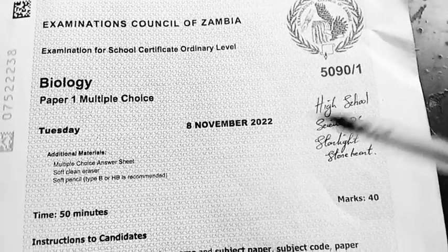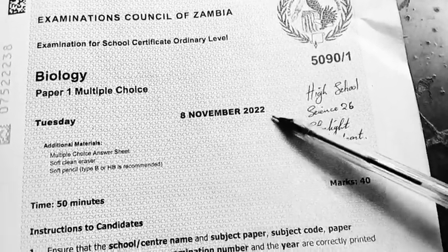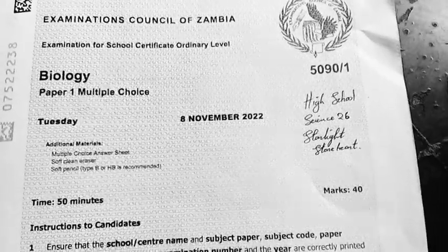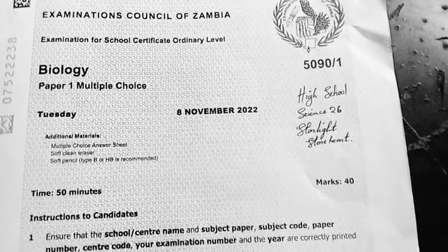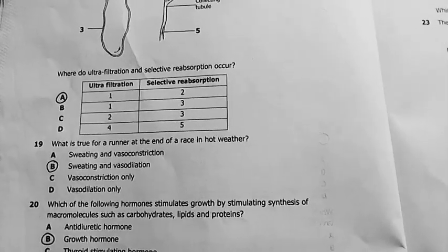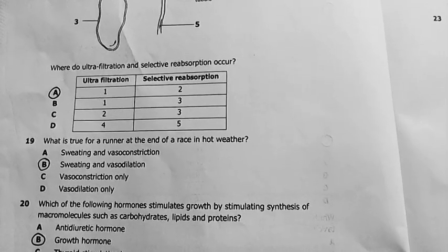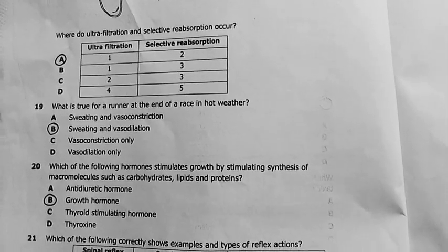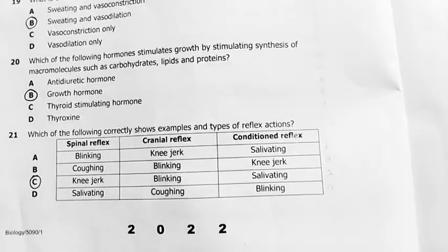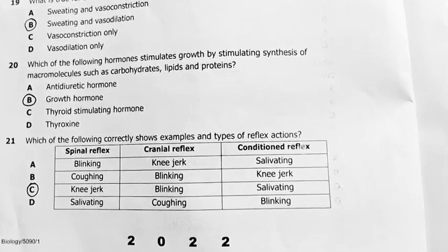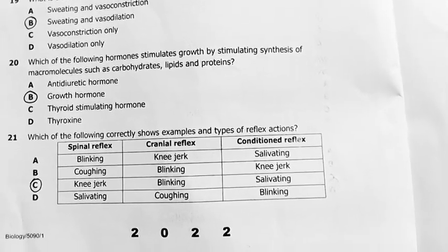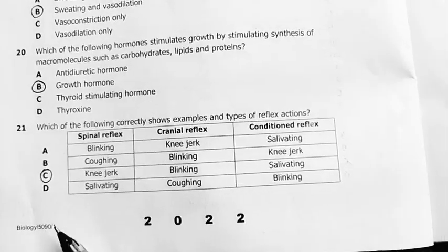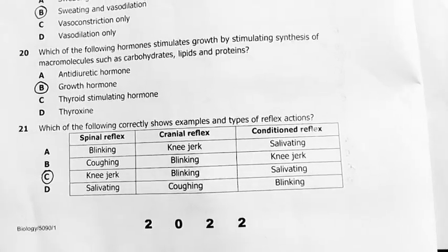Biology paper 1 for the year 2022 is what I'm about to look at today. In the previous two videos I did questions 1 to 20, and so I'm here to look at question 21 up to 40. So question 21 for this paper, biology 5090 paper 1 for the year 2022.